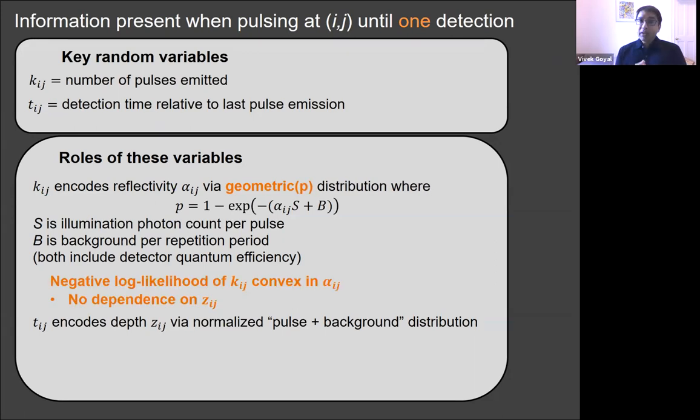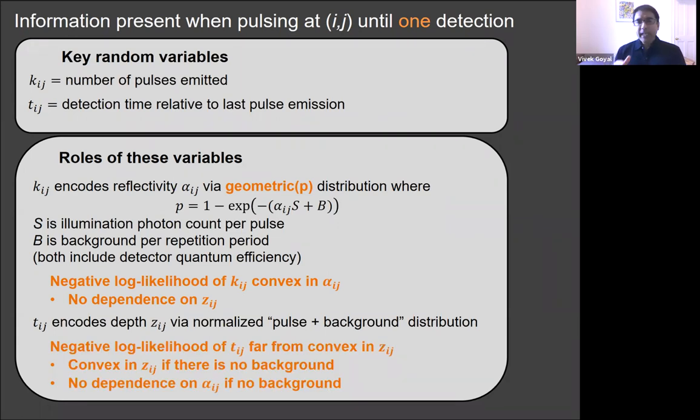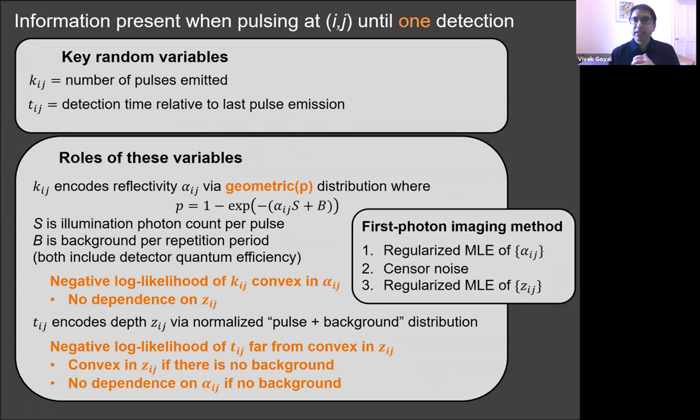We can hope that we can exploit some reasonable model of nearby pixels usually having similar depths and reflectivities to make this enough to solve an inverse problem for the depths and reflectivities. So the negative log likelihood of kij turns out to be convex in alpha ij and has no dependence on zij. That's very convenient. Nature is less kind with the tij distribution. If there were no ambient light under reasonable approximations of the laser pulse shape, we would have convexity of the negative log likelihood. But as it is, we do not have convexity. All of the ambient light contributes to having a very far from convex negative log likelihood.